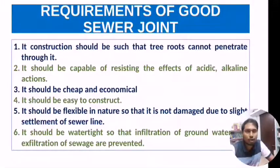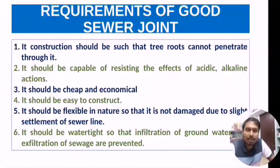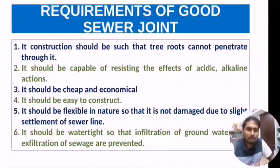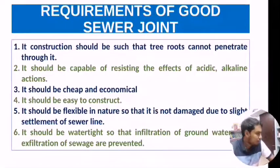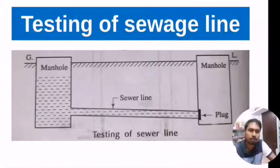A good sewer joint must meet several requirements: tree roots cannot penetrate through it; it should resist acidic and alkaline action; it should be cheap and economical; it should be easy to construct; it should be flexible so it is not damaged due to slight settlement of the sewer line; and it should be watertight to prevent infiltration of groundwater and exfiltration of sewage.